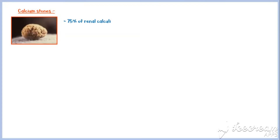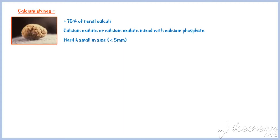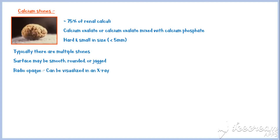Now let's discuss the different types of stones in more detail. About 75% of all renal calculi are calcium stones. They may contain only calcium oxalate, or a mixture of calcium oxalate and calcium phosphate. They are hard and small in size, and typically there are multiple stones. Their surface may be smooth, rounded, or jagged. Calcium oxalate stones are usually radio-opaque, meaning they can be visualized on an X-ray.